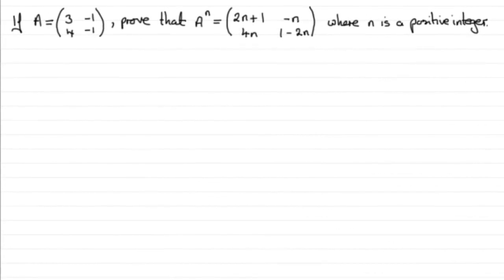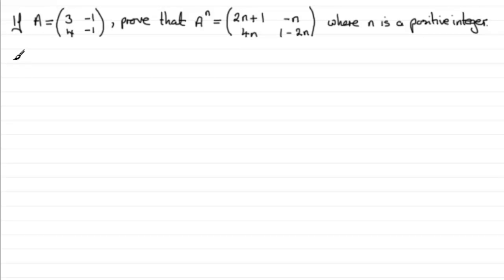Welcome to another tutorial in my series on mathematical induction, where we look at proving multiplication results for matrices. We have a matrix A which is equal to 3, -1, 4, -1, and we need to prove that A to the power n is equal to the matrix: 2n+1, -n, 4n, 1-2n, where n is a positive integer.